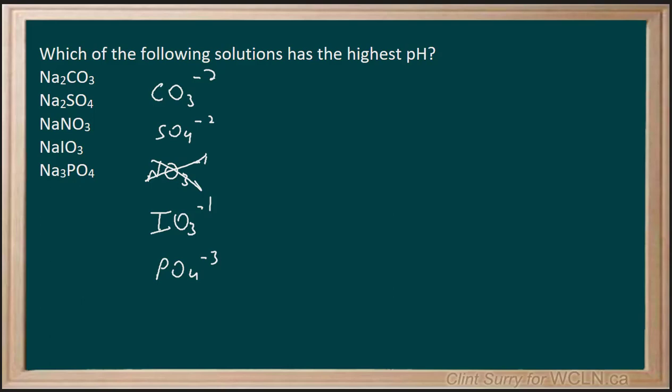On the Ka table when we look at the right side of the table we're talking about strengths of bases. The lower on the table they are, the more basic they are.